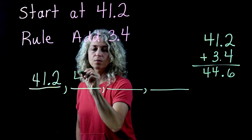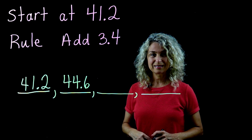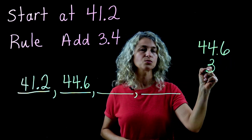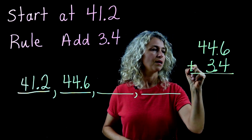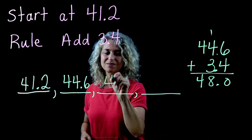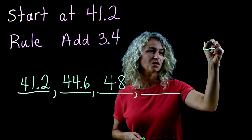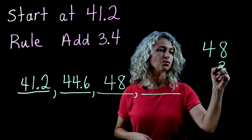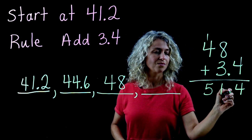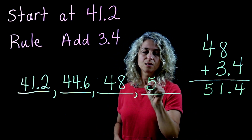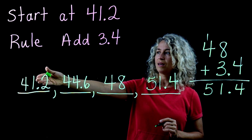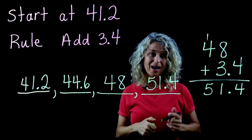That gives us our second term of 44.6. Now let's find the third term: starting with 44.6 and applying the rule of add 3.4, we get the whole number 48. Then taking 48 and adding 3.4 gives us 51.4 as our fourth term. This is how you complete a pattern when given a start point and a rule — just apply the rule repeatedly.